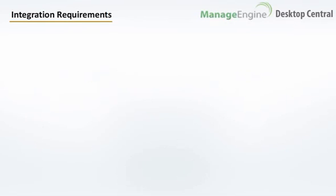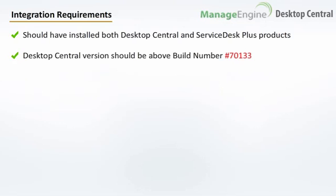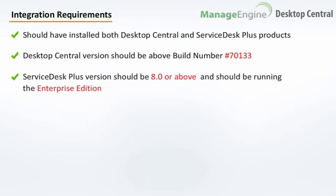Now let us see the version compatibility for integrating software deployment with Service Desk Plus. You should be running both Service Desk Plus and Desktop Central in your network. Desktop Central build number should be 70133 or above. The Service Desk Plus version should be 8.0 or above and you should be running the Enterprise Edition.